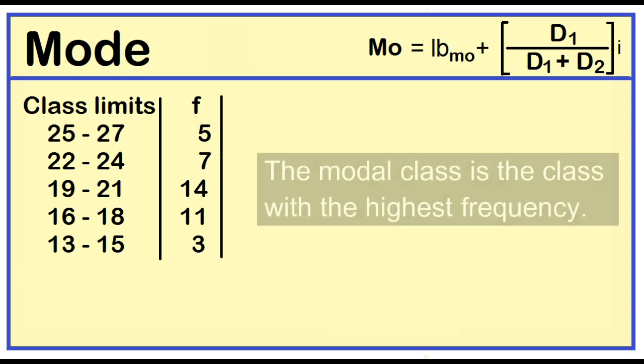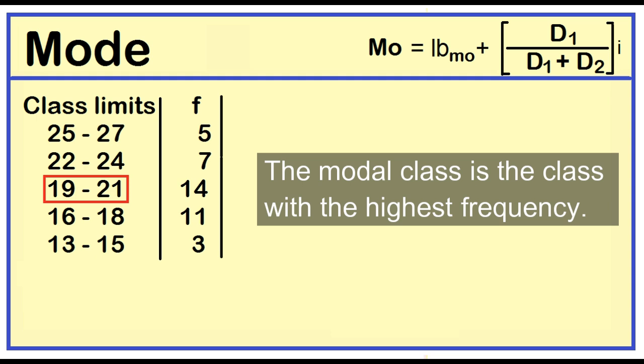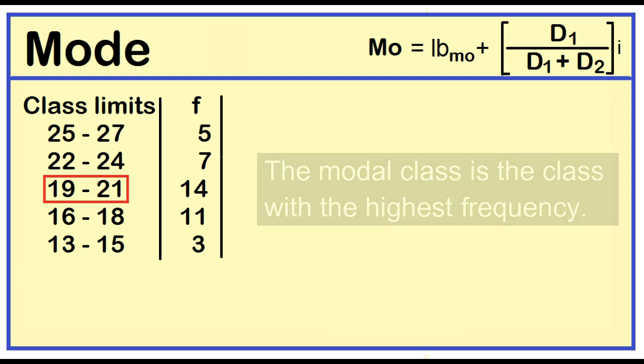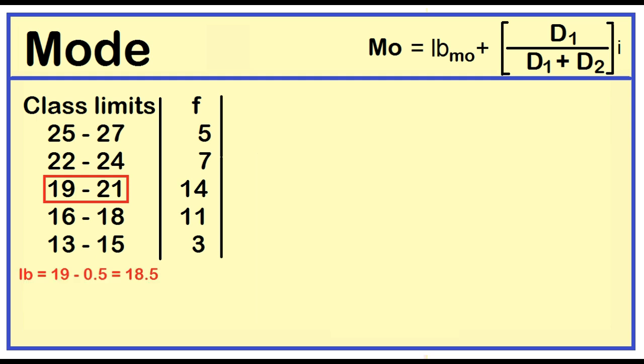The modal class is the class with the highest frequency. The highest frequency is 14 and the class with the highest frequency is 19 to 21. To find the lower boundary, just subtract 0.5 from the lower limit. The lower boundary of the modal class is 18.5. The class width is the difference between two consecutive lower limits: 16 minus 13 is 3.